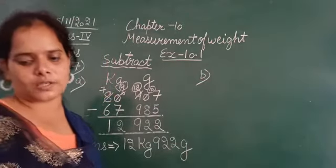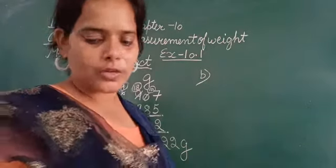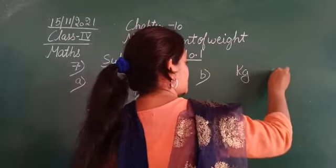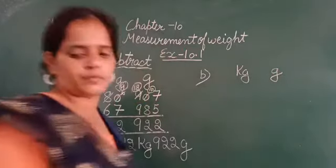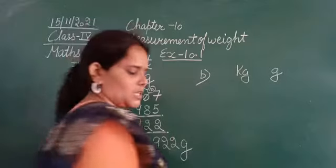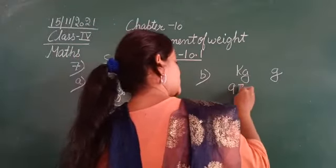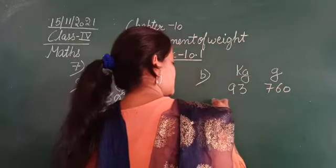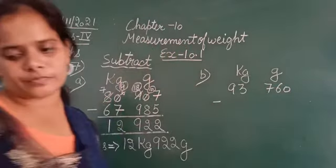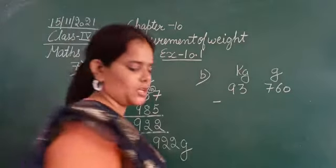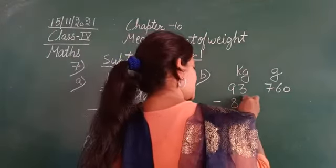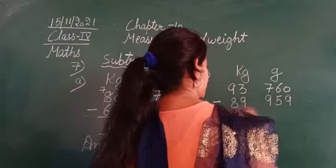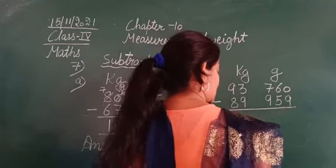So in B part, let's subtract. Again, the two standard units of measurement are kilograms and grams. So 93 kg 760 grams minus 89 kg 959 grams.